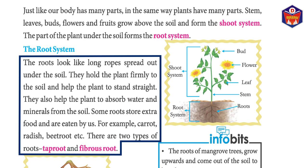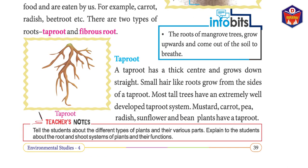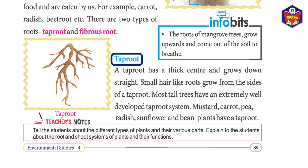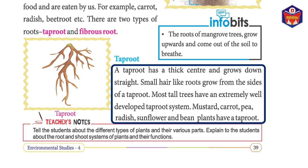There are two types of roots: taproot and fibrous roots. The roots of mangrove trees grow upward and come out of the soil to breathe. A taproot has a thick center and grows straight down.